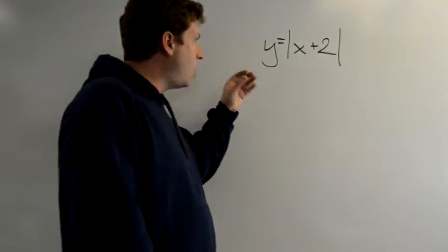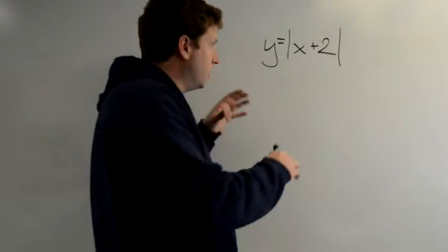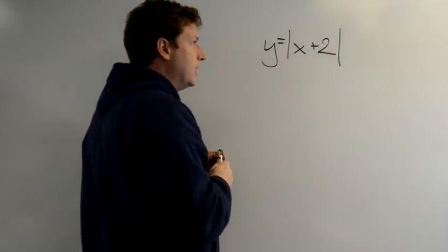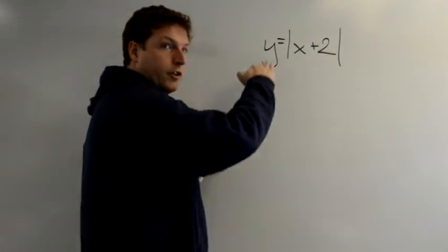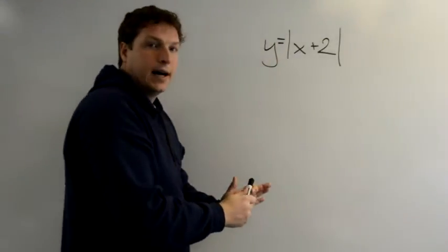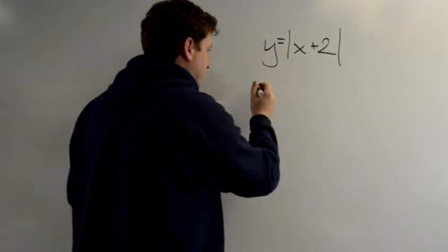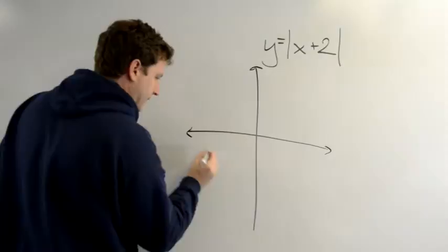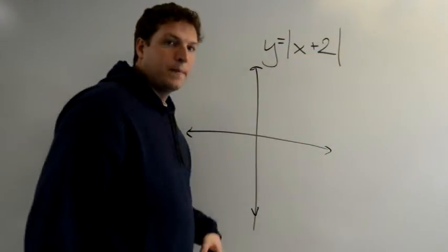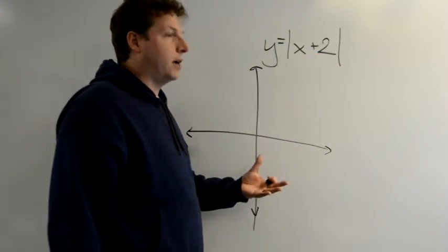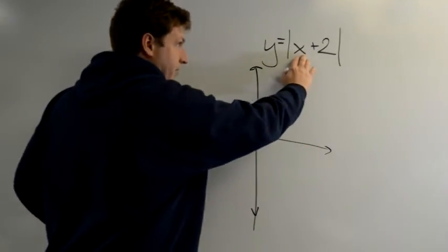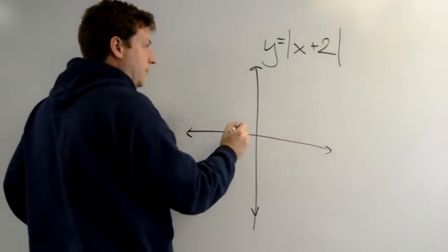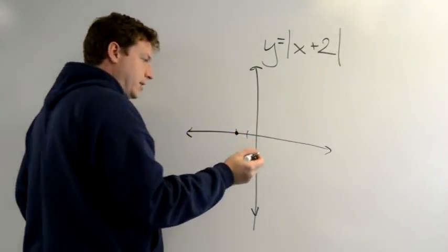We're going to graph y equals the absolute value of x plus 2. It's a little different. Now my plus 2 is inside my absolute value. Before we talked about a vertical shift of my absolute value; now we're going to look at how we shift it horizontally. It's actually really easy. This plus 2 is telling me that my graph is shifted — it is my absolute value, but it's shifted 2 units to the left, so that this point is my starting point.